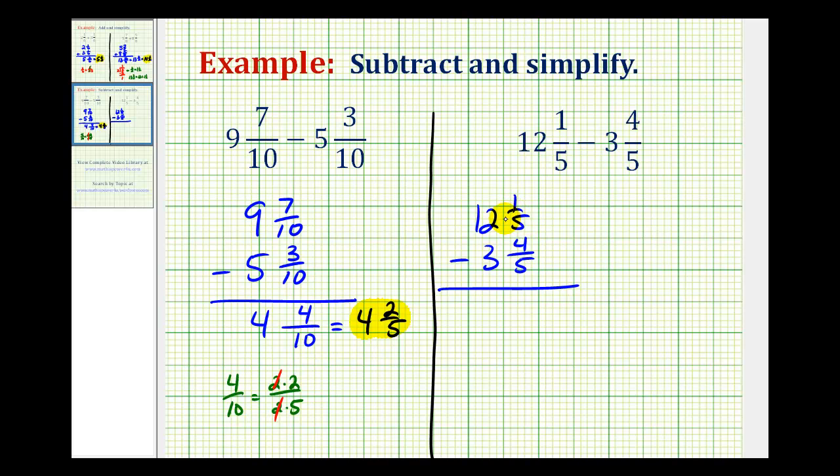So let's take a closer look at borrowing from the 12. 12 and 1 fifth is equal to 11 plus 1 plus 1 fifth. But we could rewrite this as 11 plus, instead of 1, we can write 1 as 5 fifths plus 1 fifth. So notice how this would give us 11 and 6 fifths.